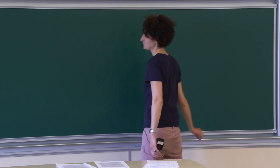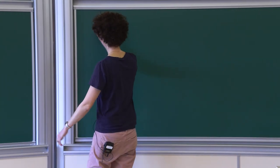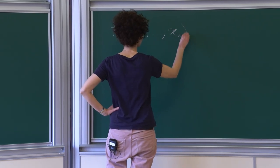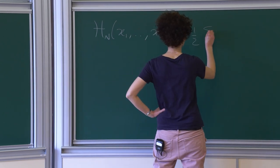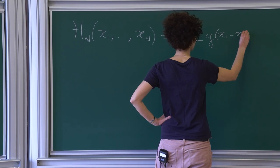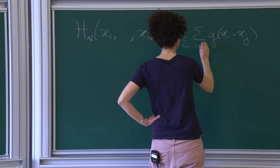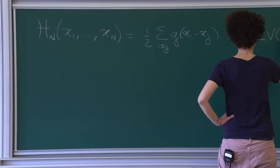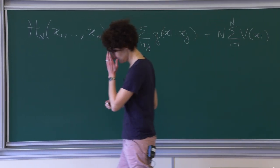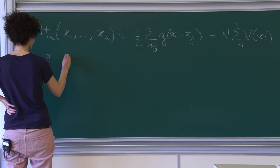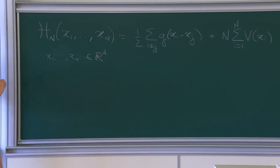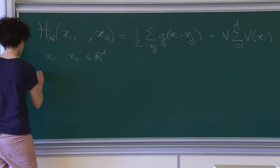I want to start by defining an energy for a system of N points: it's a sum of pair interactions with an interaction kernel g, plus some potential energy. The points x₁ through xₙ live in a Euclidean space of dimension d.